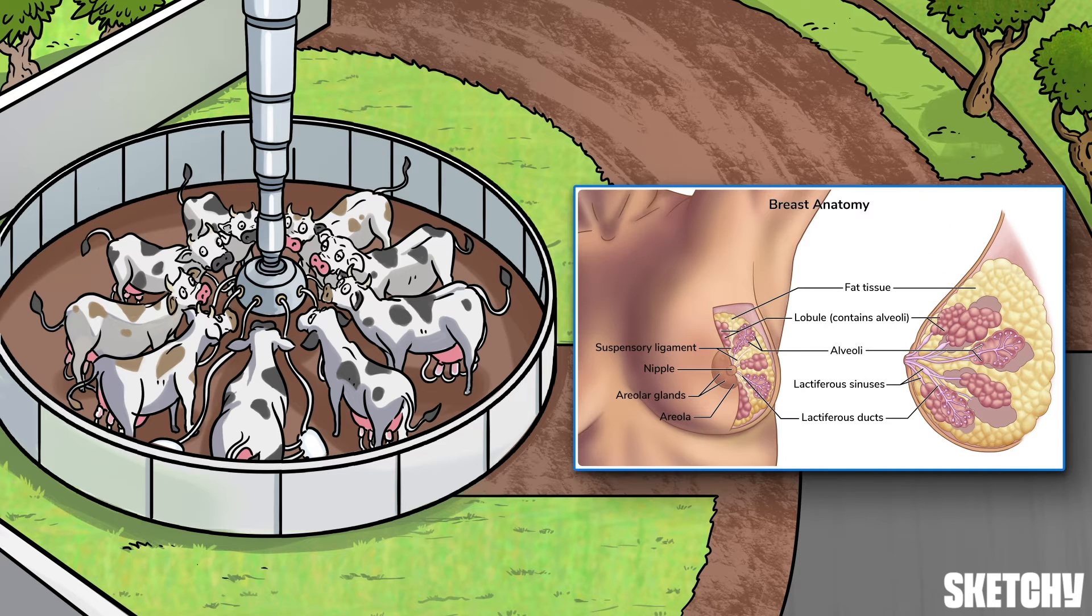Breasts are accessory organs of the female reproductive system and lie over the pectoralis muscles in the anterior thoracic wall. The boundaries of the breast include the second rib superiorly, the sternum medially, the sixth rib inferiorly, and the midaxillary line laterally.